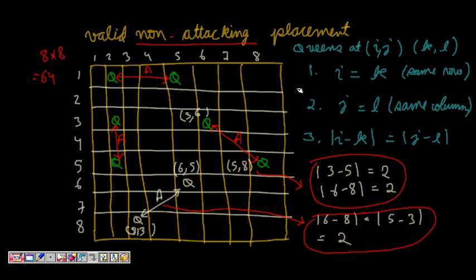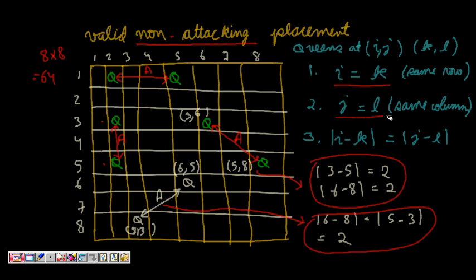When placing queens, say one is at position (i, j) — i-th row and j-th column — and another at (k, l), they can attack each other if i equals k, meaning they are in the same row. Similarly, they can have the same column, like positions (3,2) and (5,2), which allows them to attack each other.